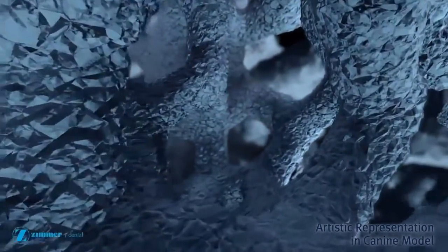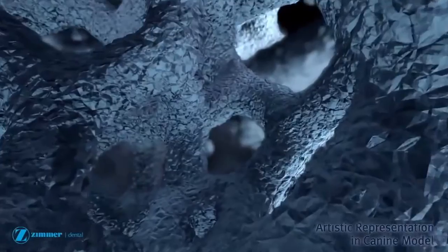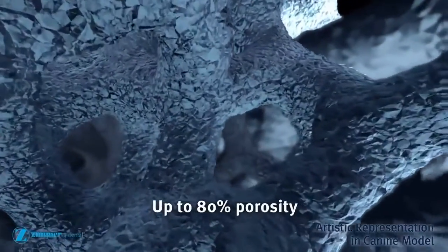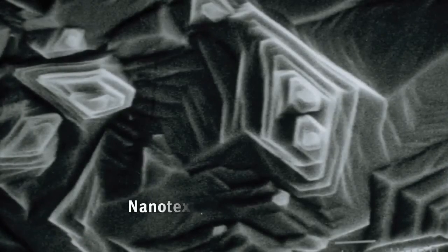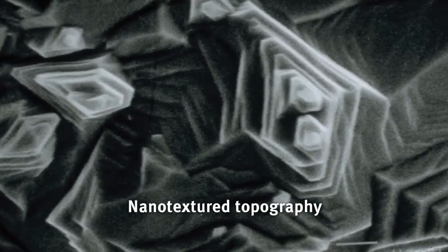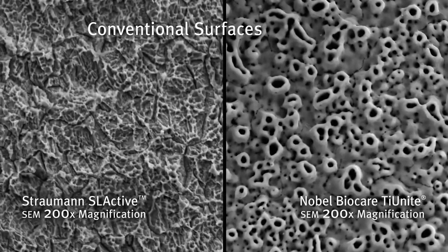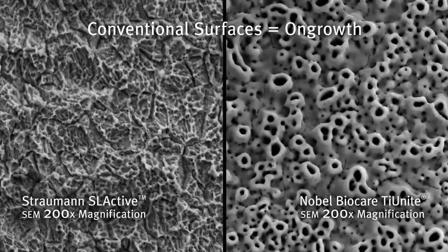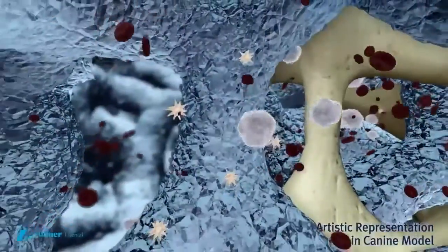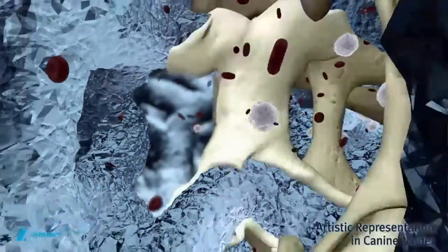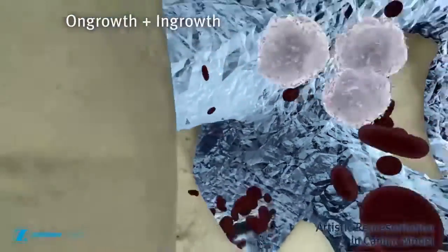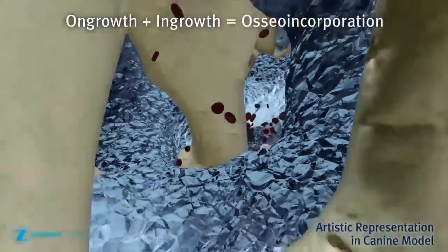A glimpse inside trabecular metal material reveals its uniform three-dimensional cellular architecture with up to 80% porosity. The entire surface area of trabecular metal material exhibits a nano-textured topography. Conventional textured or coated implant surfaces achieve bone-to-implant contact or on-growth. However, trabecular metal material's consistent, open and interconnected network of pores is designed for both bone on-growth and bone in-growth, or osseo-incorporation.